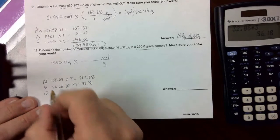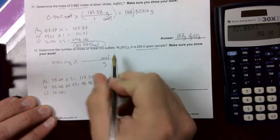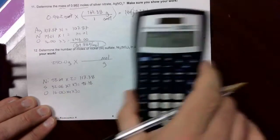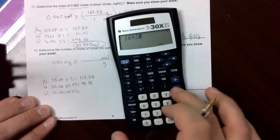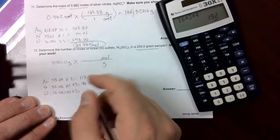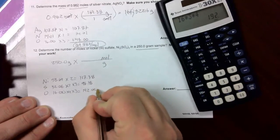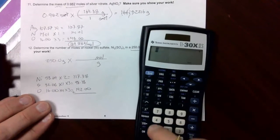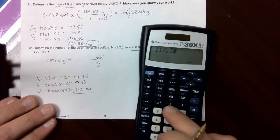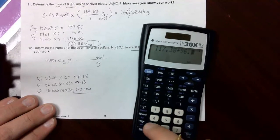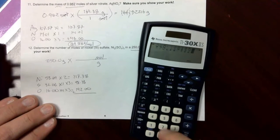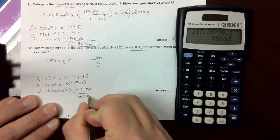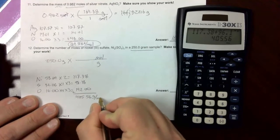And then oxygen, we know is 16. Times the subscript on oxygen, 4. Times the subscript outside the parentheses, 3. 16 times 3 times 4. Gives us 192. Now we've got to add all this up together. 117.38 plus 96.18 plus 192. And we get 405.56 grams per mole.